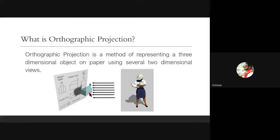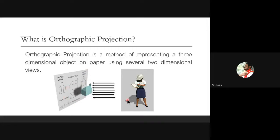When we are seeing from the front of the object we get the front view. Same way, if you see from the side you get the side view — either left side view or right side view. When you see it from the top you get the top view. Like this we collect all the information and write it on the 2D paper. This is what orthographic projection is.